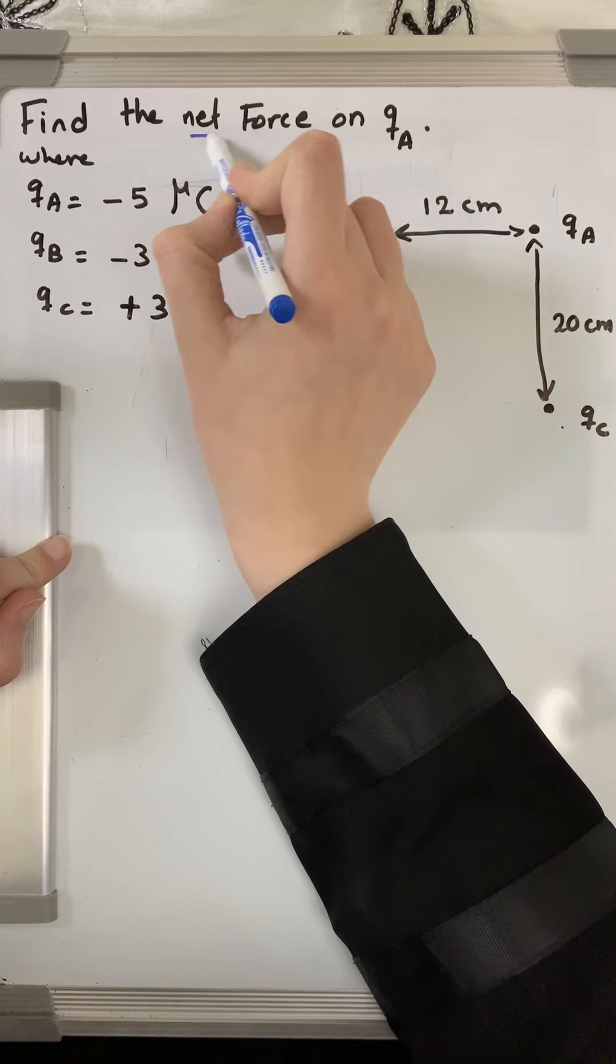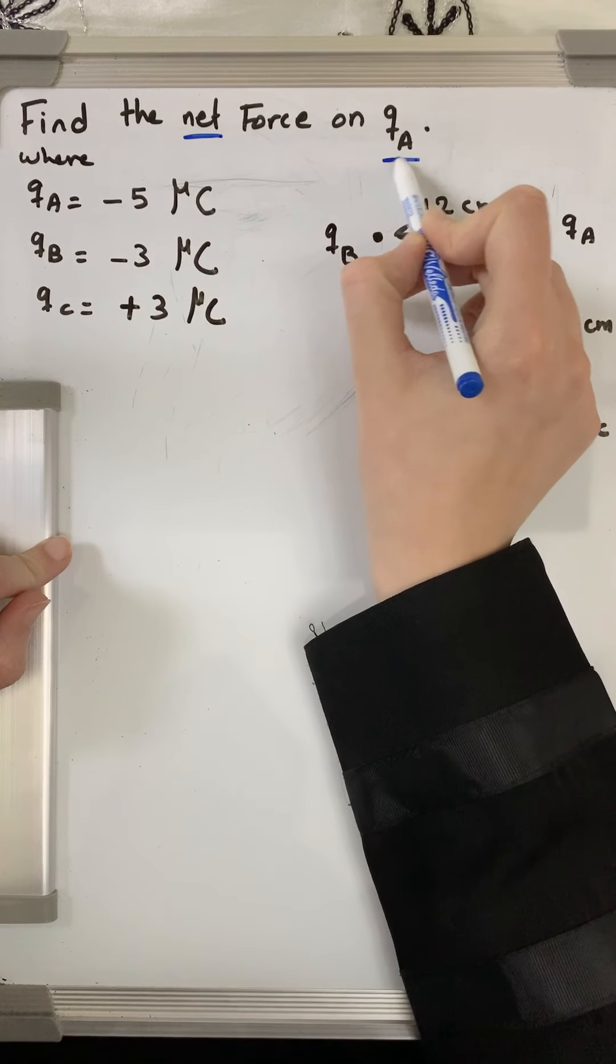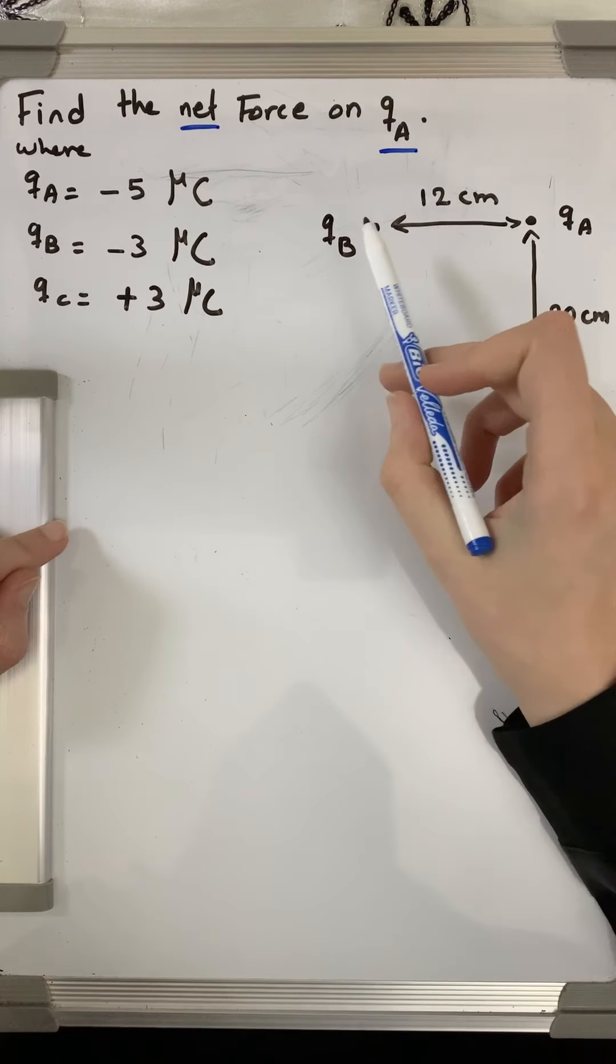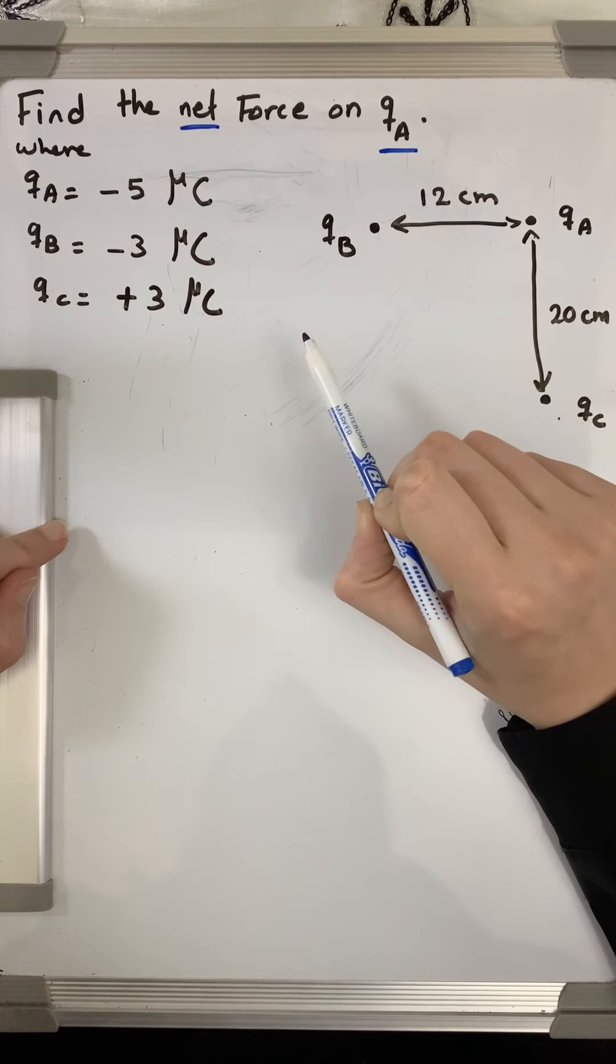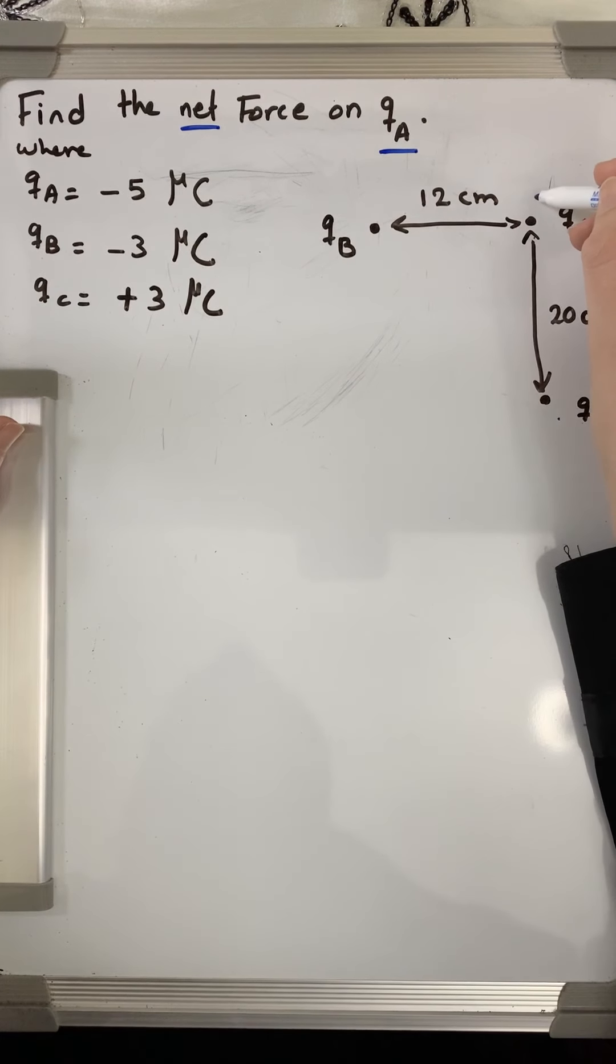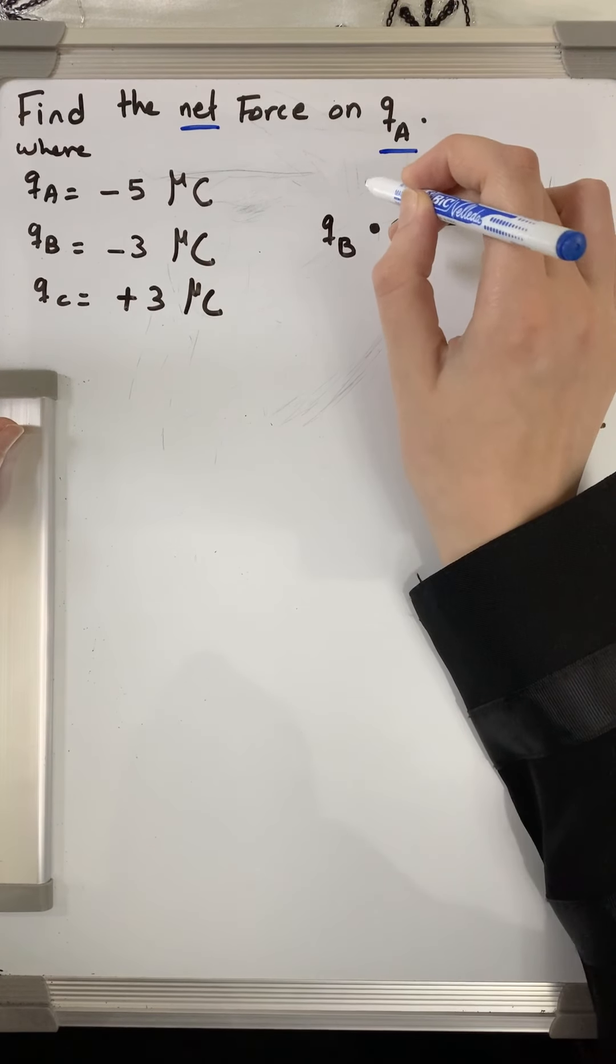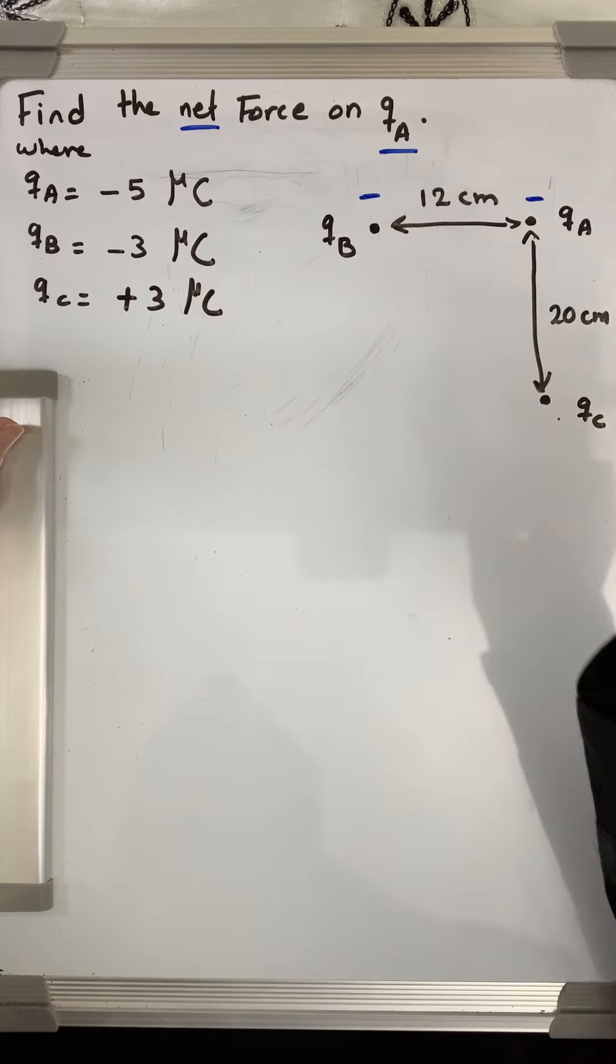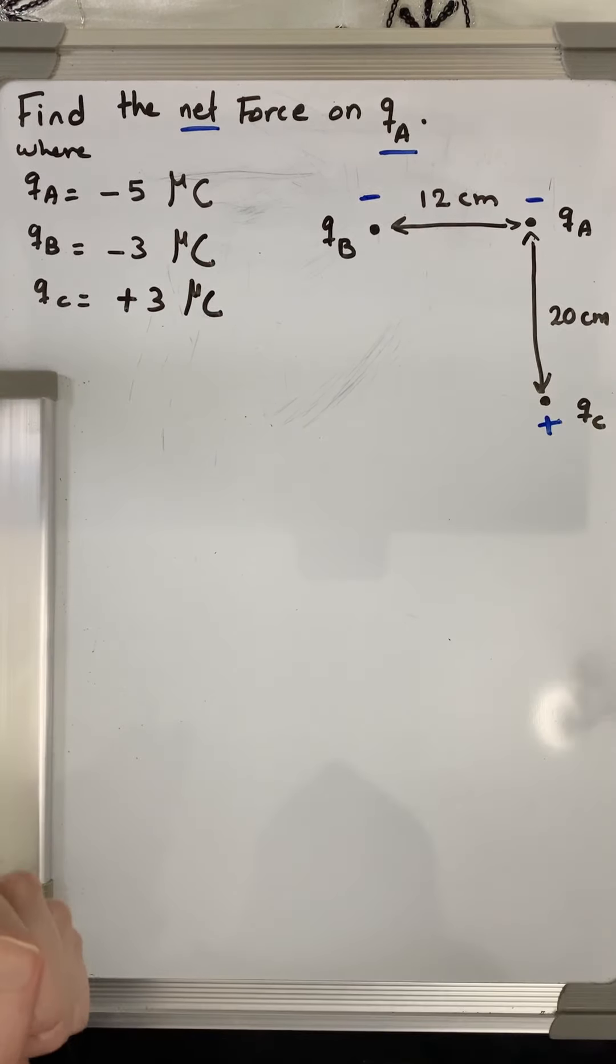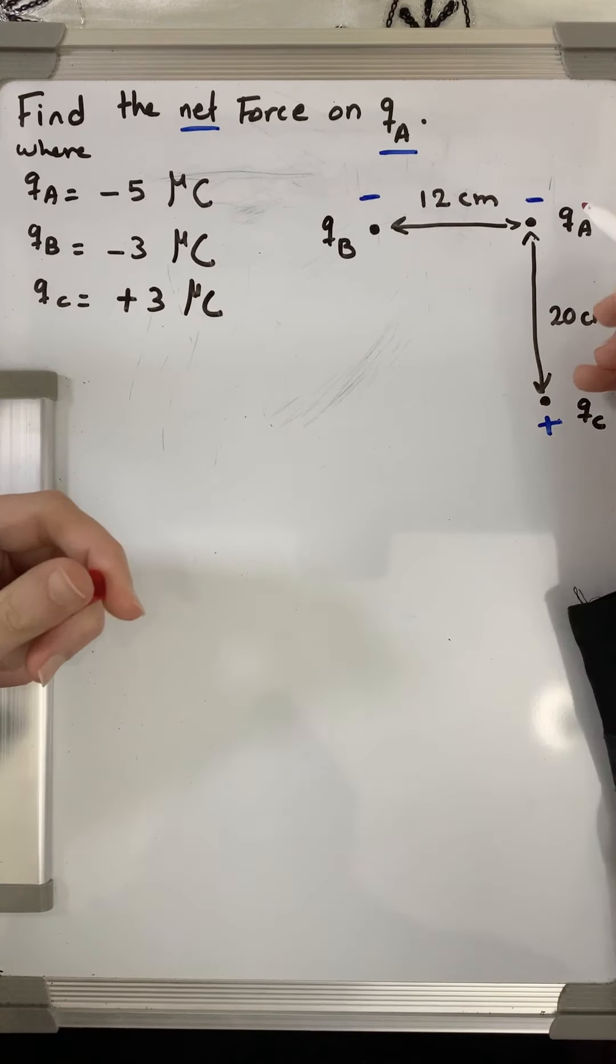total force. Net force means total force on the charge qa. This charge over here, qb, will be affecting qa. As we see that qa is negative while qb is also negative, qc is positive. So qb actually will repel...